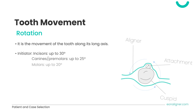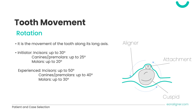Rotation is the movement of the tooth along its long axis. Initiators may rotate incisors up to 30 degrees, canines or premolars up to 25 degrees, and molars up to 20 degrees. Experienced doctors may rotate incisors up to 50 degrees, canines or premolars up to 40 degrees, and molars up to 30 degrees. Incisors are easier to rotate due to their flat anatomy. Attachments should be used, and space must be available around the tooth.